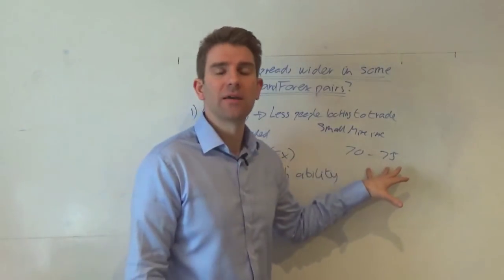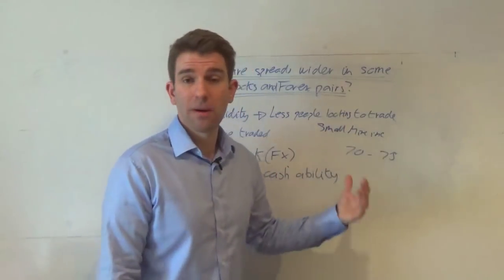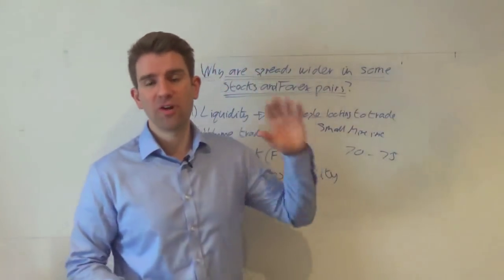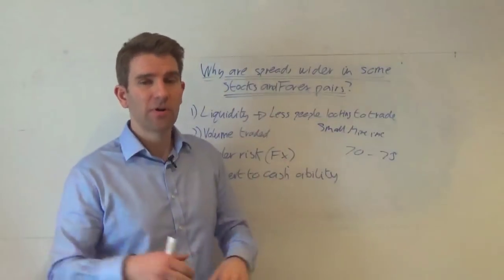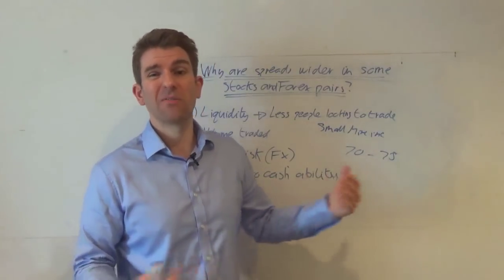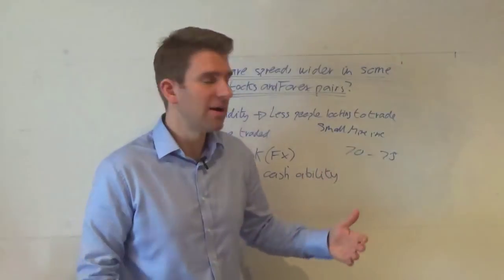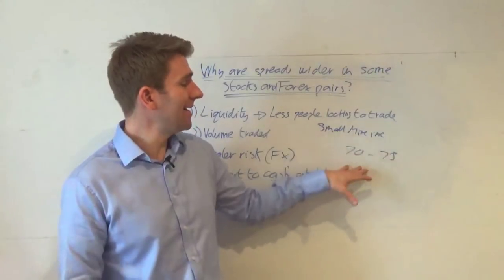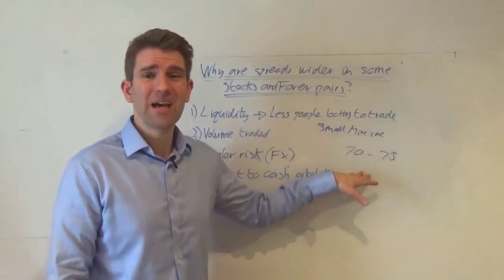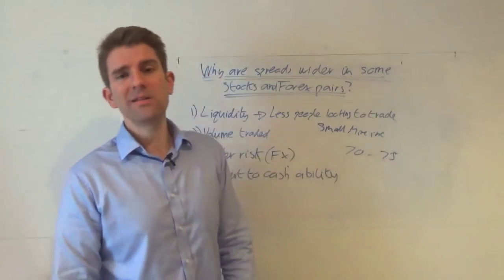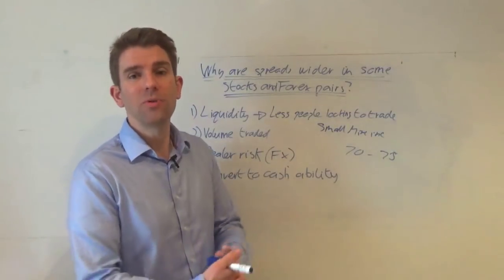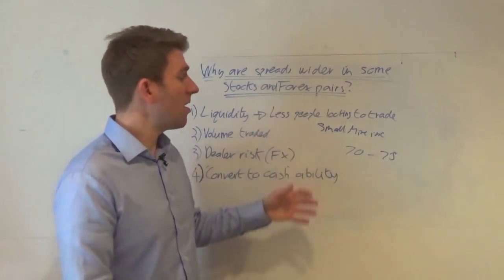We also have to look at the convert-to-cash ability. If you're a market maker or making a decision about buying or selling a stock, you want to know you can get in and out quickly. If you buy Apple shares, you can get out in an instant. Apple will soak up pretty much all you can throw at it, so conversion to cash is easy. Whereas if you're looking at Small Mine Inc., you're going to think harder about it - if I buy at 75 I'm already down five dollars.